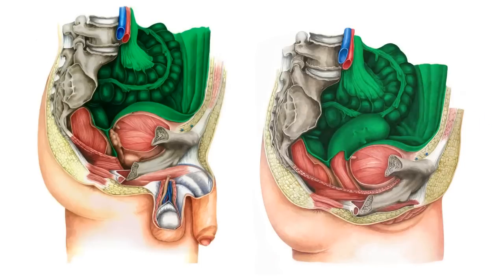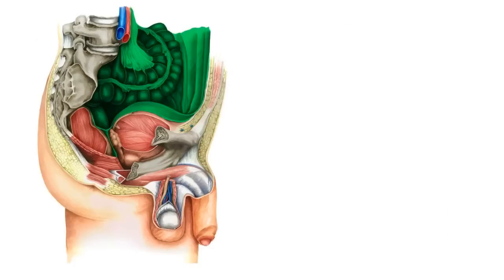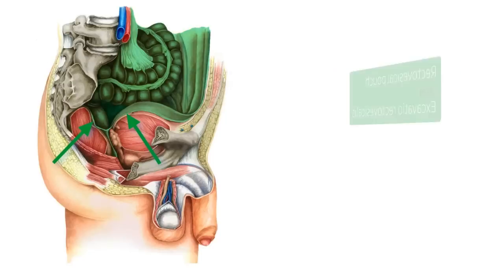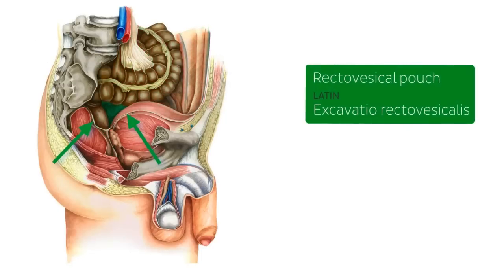Now looking at our male peritoneal and pelvic cavities, we can see that the peritoneum over the surface of the urinary bladder is continuous with the peritoneum covering the surface of the rectum. The space between the two structures is called the recto-vesical pouch.